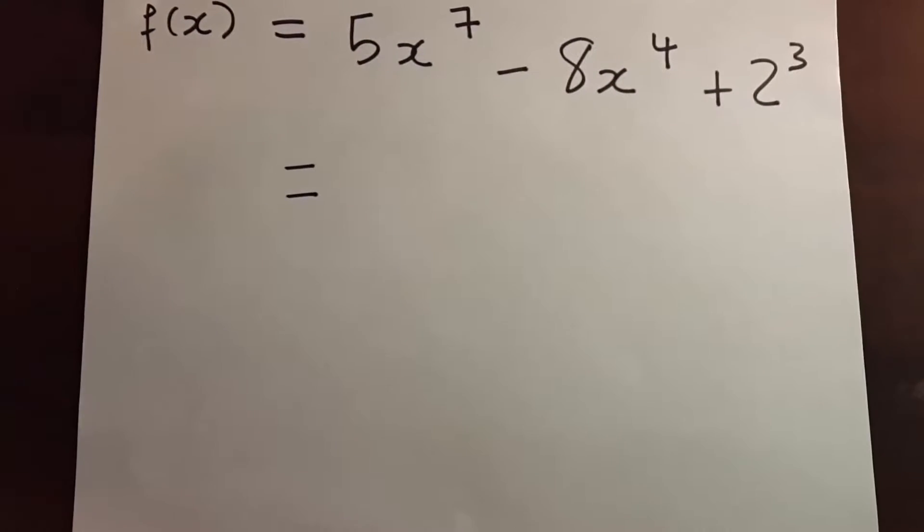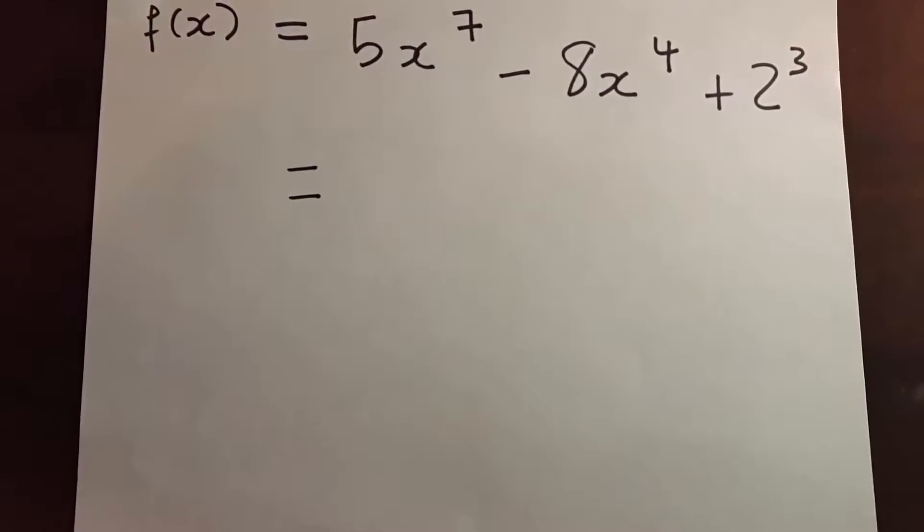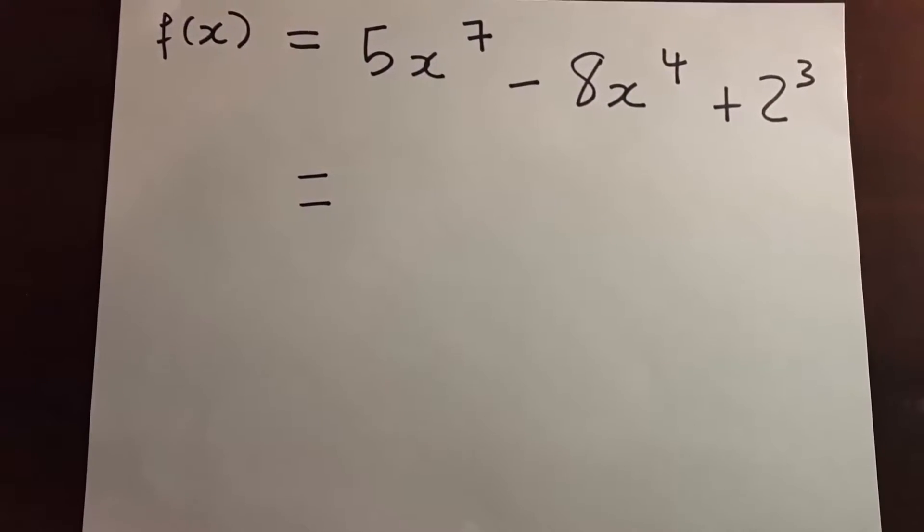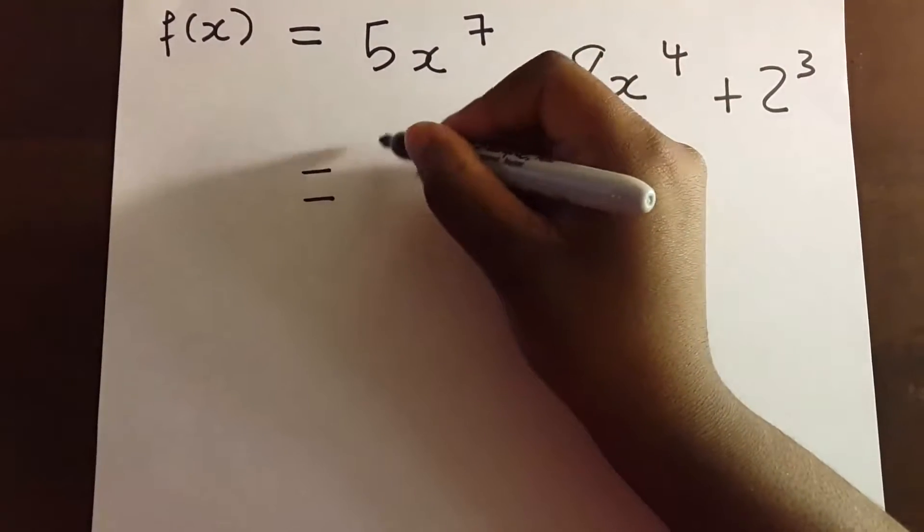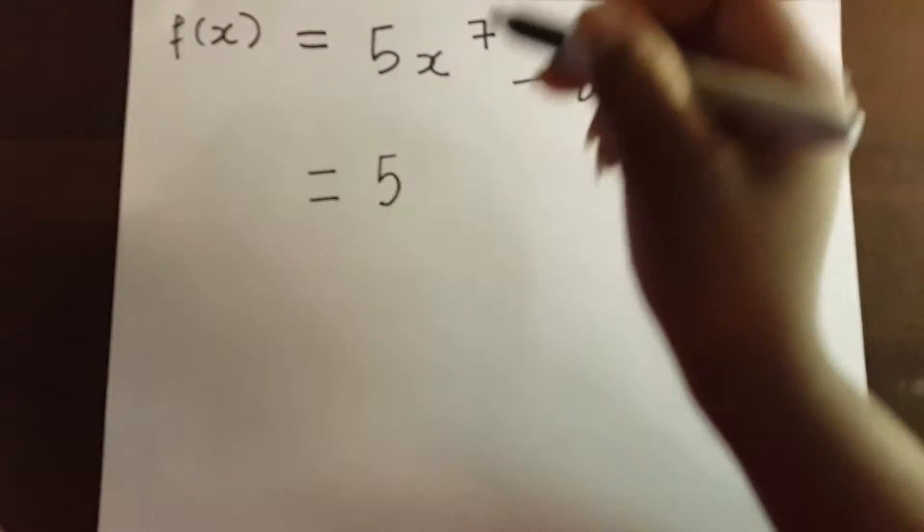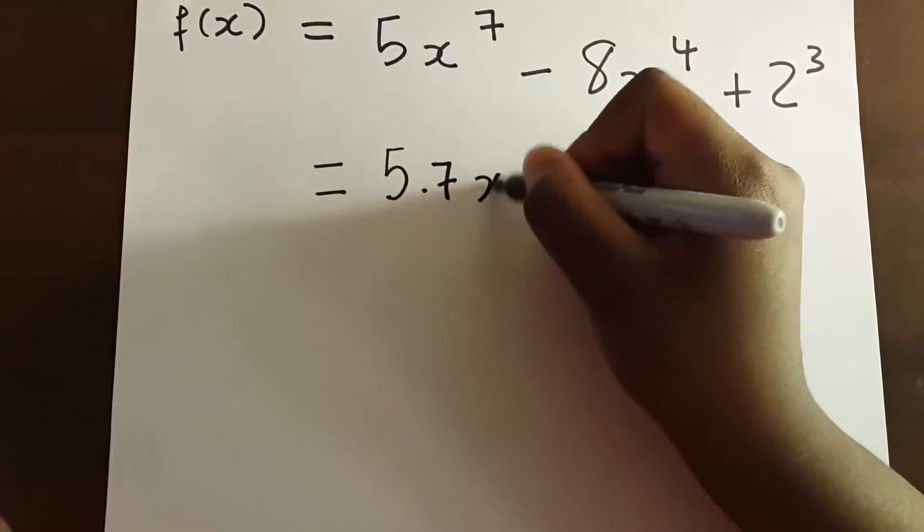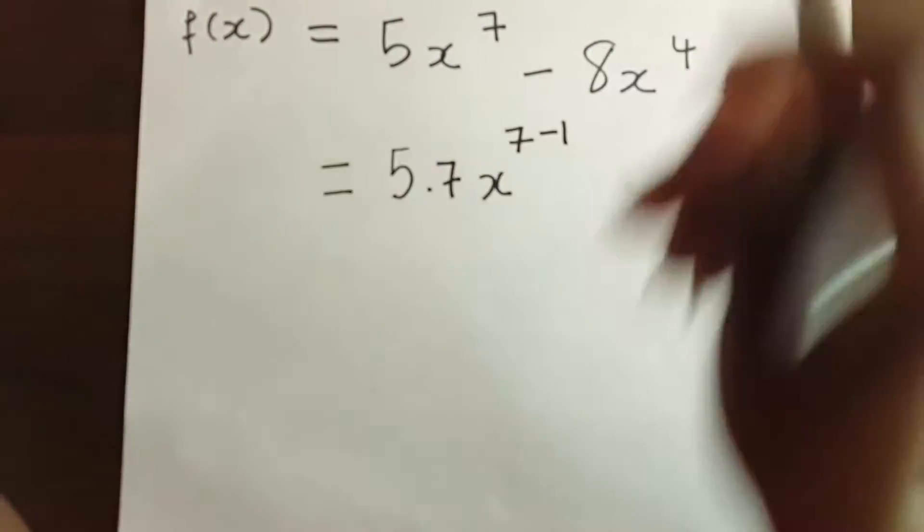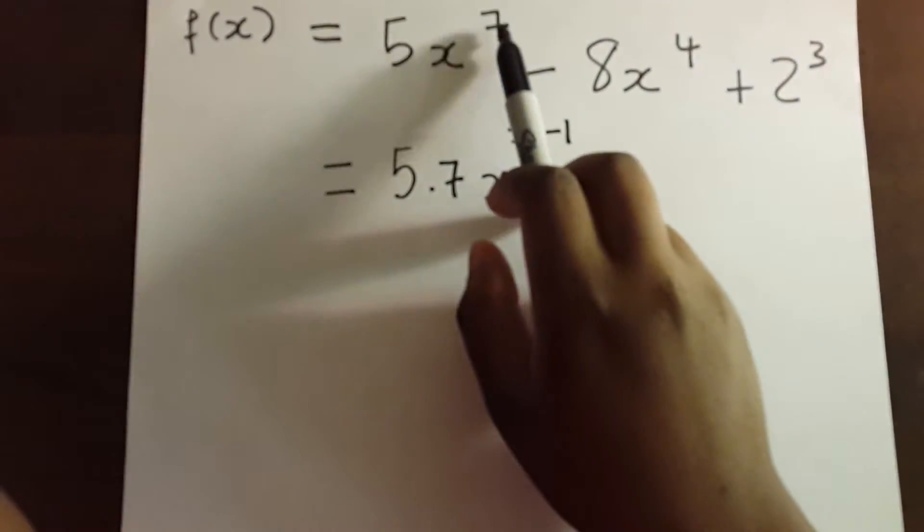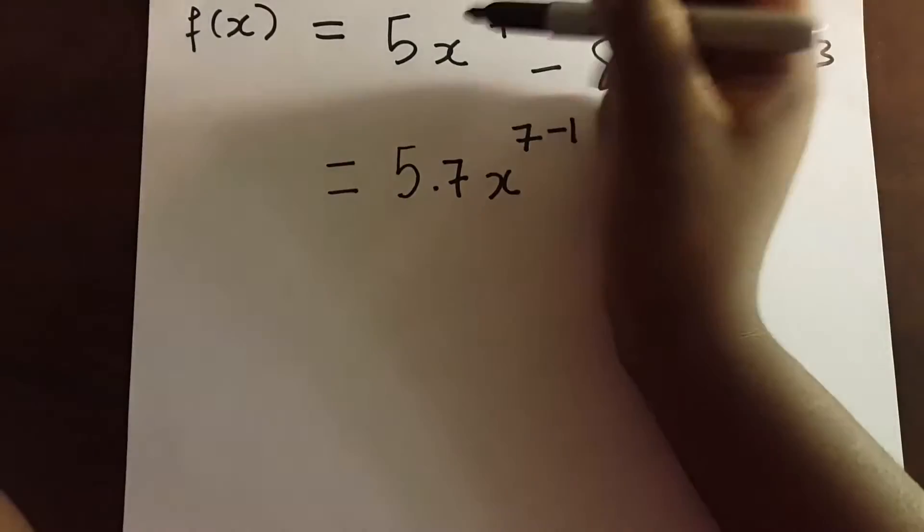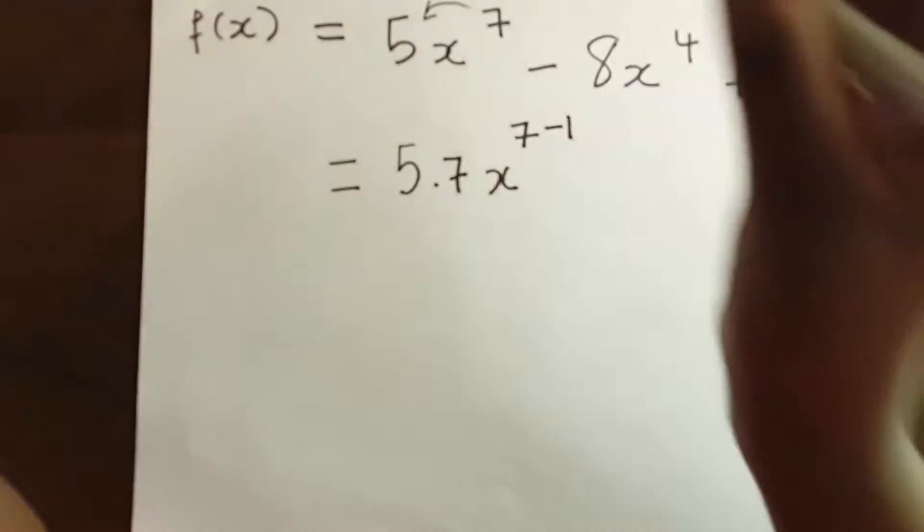We're given 5x^7 - 8x^4 + 2^3. What you do is write 5 and then multiply by 7, and then write your x and then say 7 minus 1. You always minus the exponent by 1 and multiply the exponent by the coefficient.